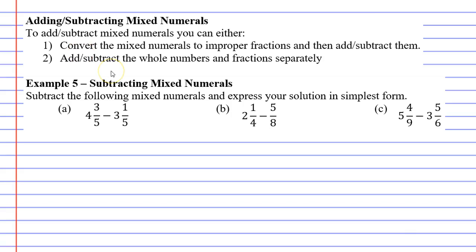Now you might remember that there are two different methods you can use to do this. I'm only going to focus on method 2 because I find this quicker and easier to do. Method 2 says to add or subtract the whole numbers and fractions separately. So for this example we're going to subtract them separately.